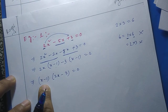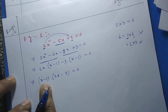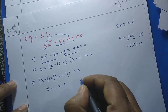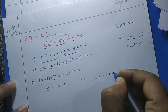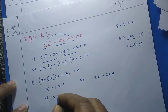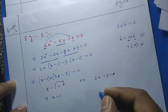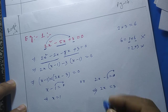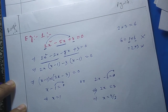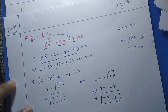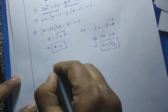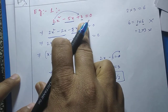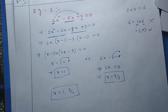We have ultimately obtained two linear factors multiplied together. So we can say either (x − 1) = 0 or (2x − 3) = 0. From the first factor we get x = 1. From the second factor, 2x = 3, so x = 3/2. Therefore the two roots are x = 1 and x = 3/2. These are the required roots of the given quadratic equation, and we have solved it by using the middle term factorization method.